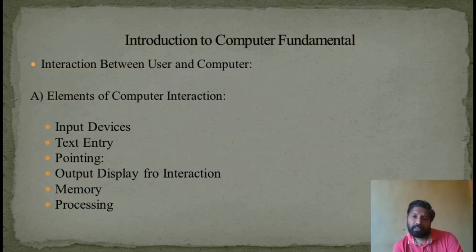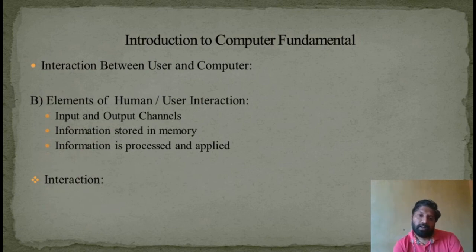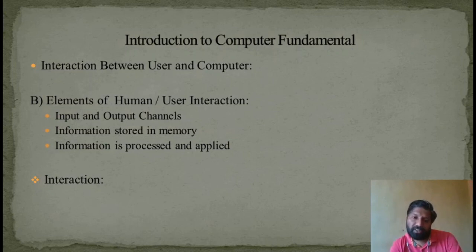Interaction between user and the computer. The elements of human user interaction: input and output channels. This is based on one platform only, how to interact with input and output channels. Next, information storage and memory. Whatever we use to type in the computer, we save it. It saves in the memory. Information is processed and applied. While we are saving it, while writing it, it is processed accordingly and then gets saved.